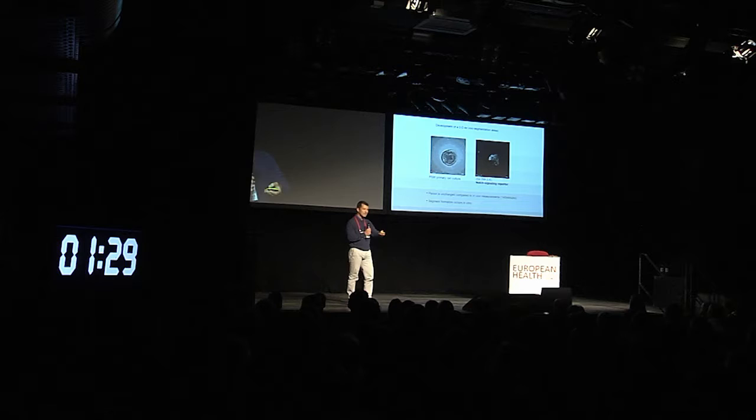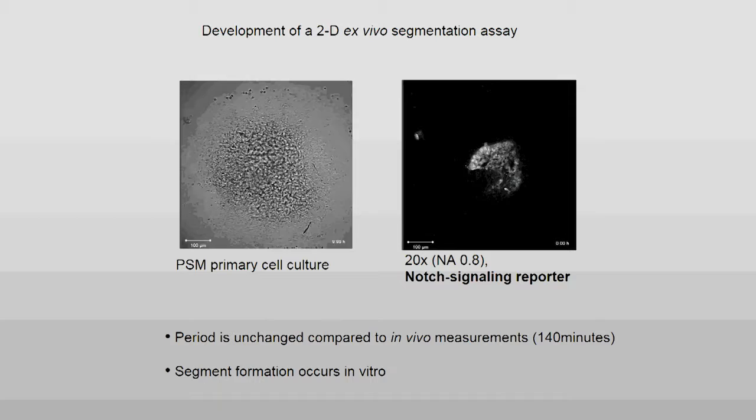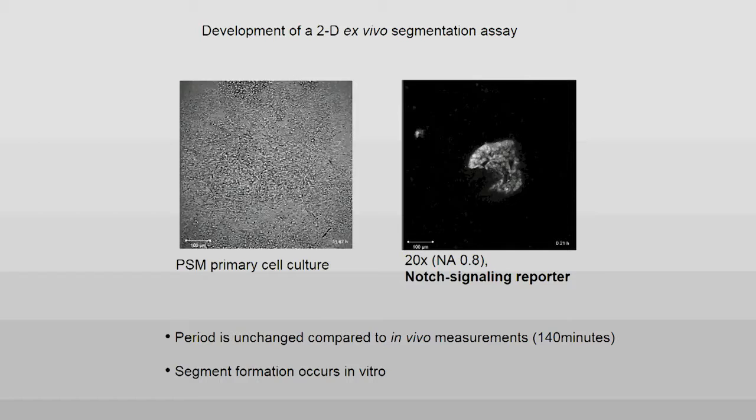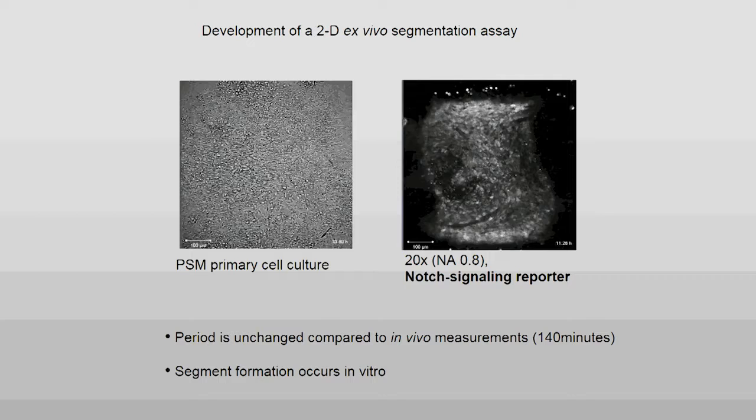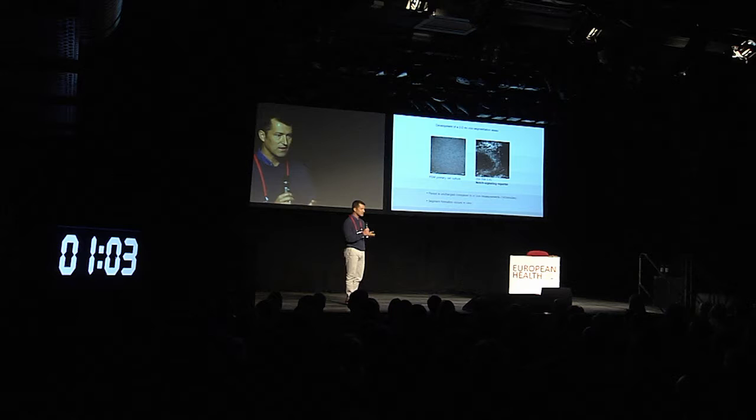For these reasons, we devised a new setup in my laboratory — an ex vivo setup, primary cell culture. We use cells from the embryo to see it in the dish. This looks like a primary cell culture, but look at the dynamics on the right: Notch signaling dynamics. If I play the movie, you will see pulses appearing. And look what happens now — waves appear again in this monolayer of cells in a petri dish.